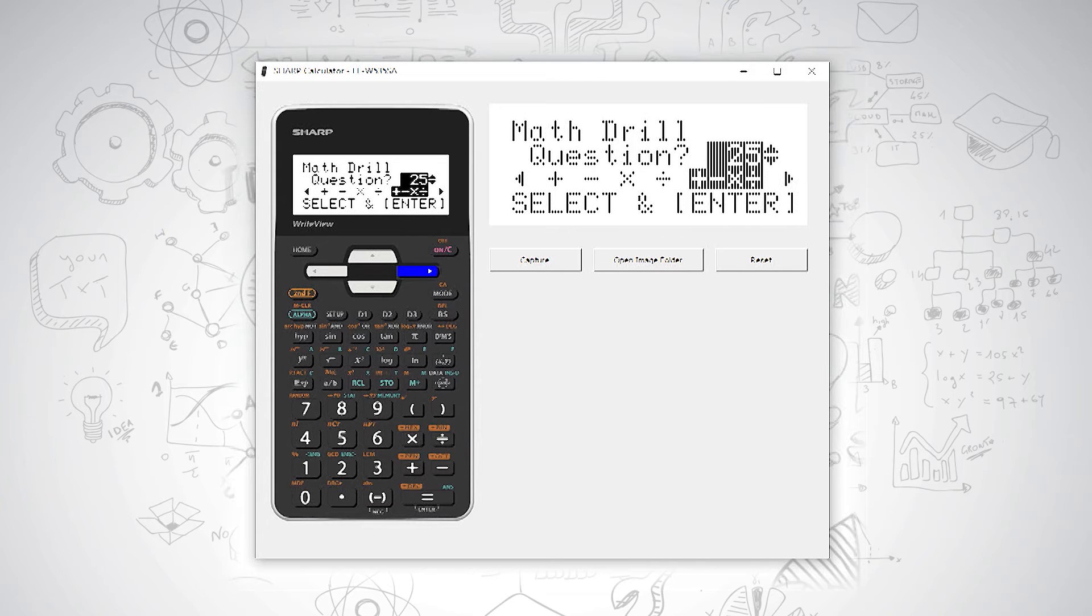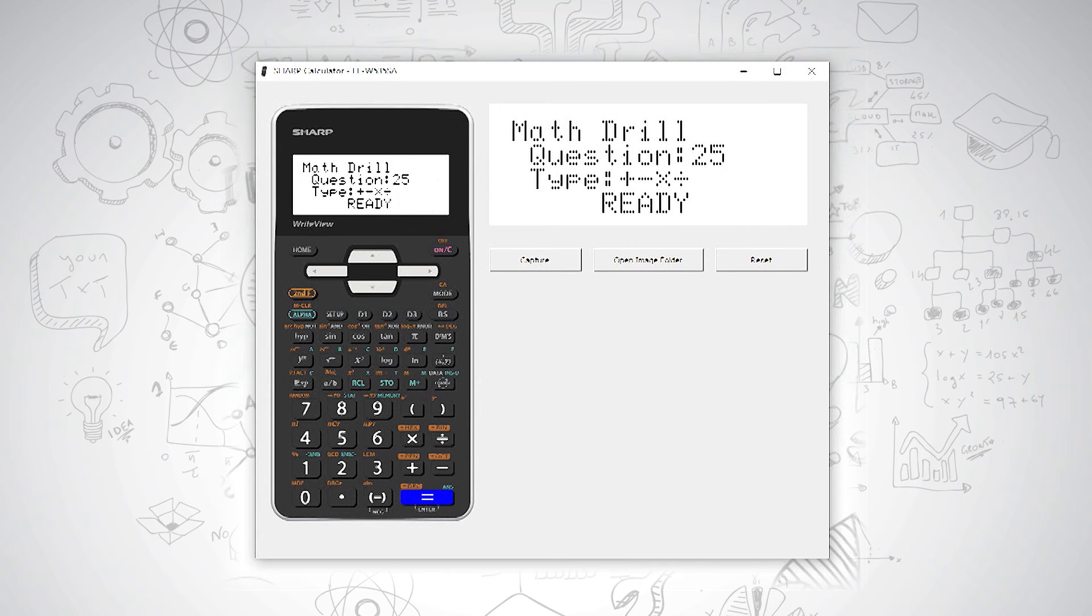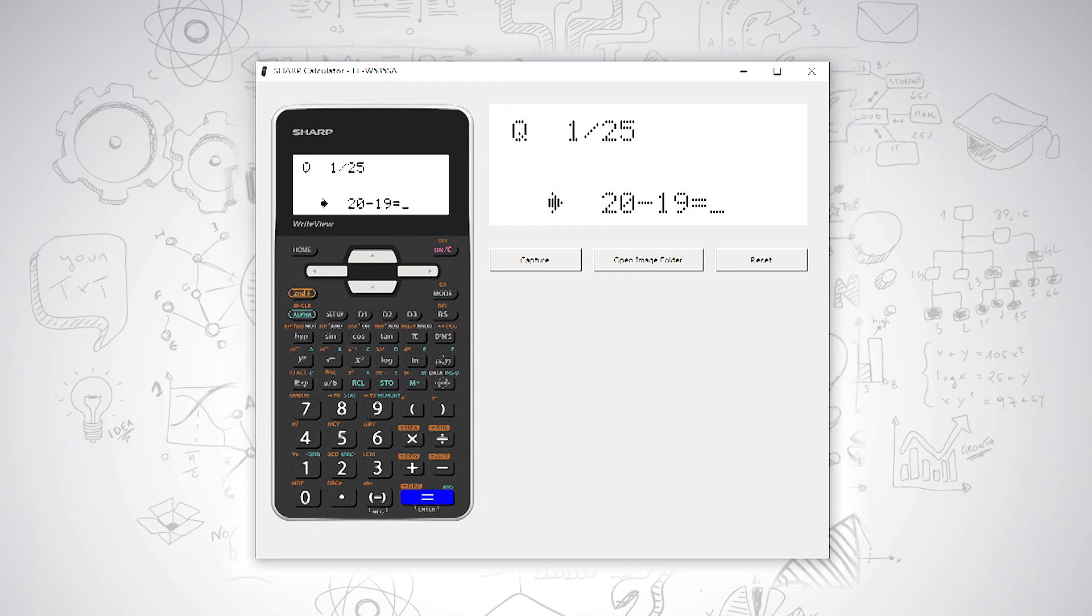When you are ready, press your equals button and the calculator will ask you a random maths question. You type in the answer by pressing the answer and then pressing equals for the calculator to mark your answer.